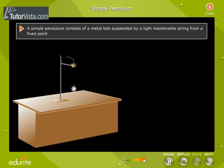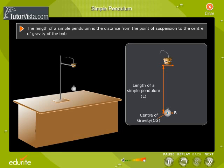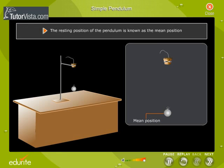Let us now get familiar with the terms that we come across while learning a simple pendulum. The length of a simple pendulum is the distance from the point of suspension to the center of gravity of the bob. The resting position of the pendulum is known as the mean position.